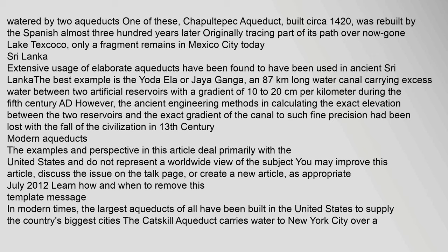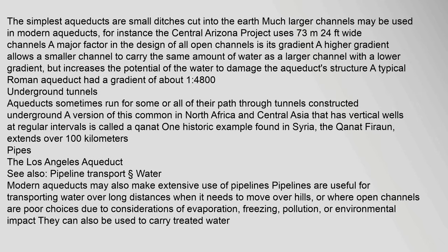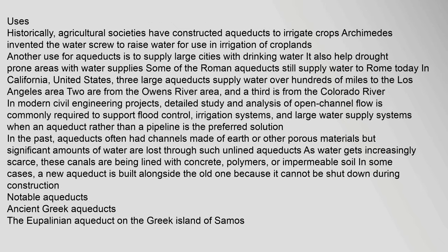In modern times, the largest aqueducts of all have been built in the United States to supply the country's biggest cities. The Catskill Aqueduct carries water to New York City over a distance of 120 miles (190 km). The simplest aqueducts are small ditches cut into the earth, but much larger channels may be used in modern aqueducts; for instance, the Central Arizona Project uses 73 miles of canal.